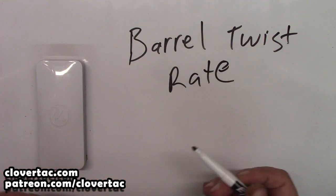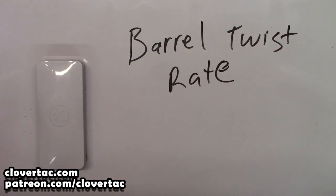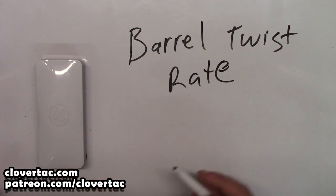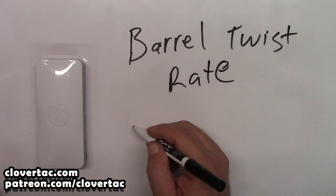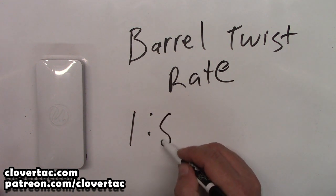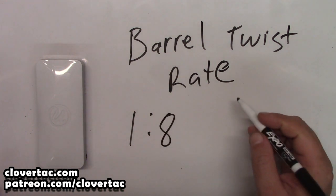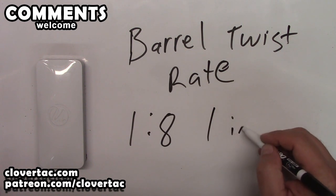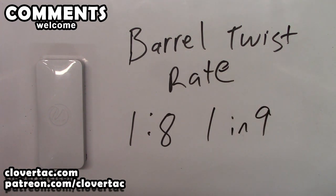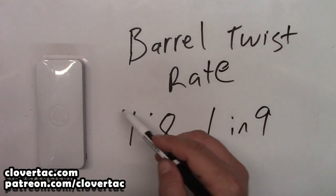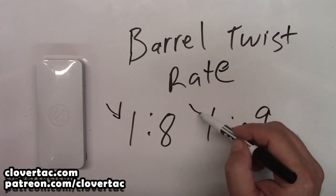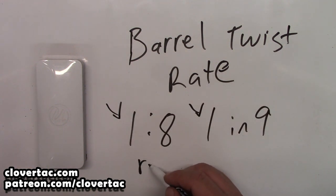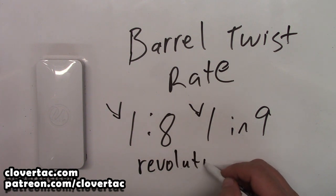Now if you're looking at buying a rifle, you're probably going to see the barrel twist specs on there. And it's going to be written out something like a one colon, maybe eight, or potentially it'll actually say one in, let's say nine. Now this first number, this one, has to do with the revolutions.